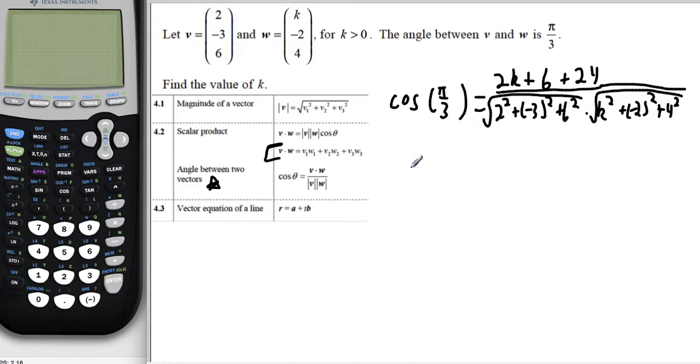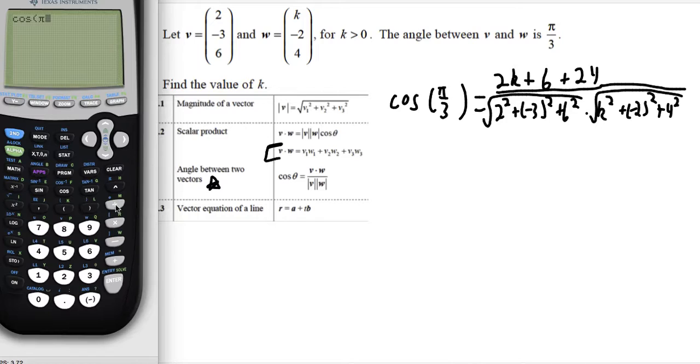Right, so now we can start to clean this up a little bit. Cosine of pi over 3. We can use the unit circle to figure this out. Of course, we've got the calculator, so we could figure it out. If we type that in, we would get, hopefully, a half. Let's just verify pi divided by 3. Yeah, we get 0.5.